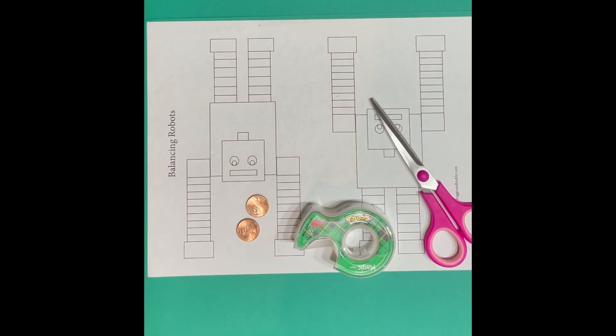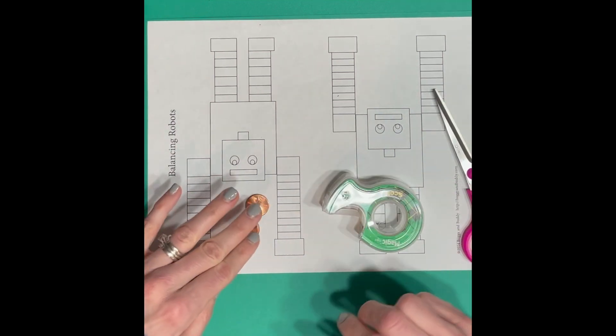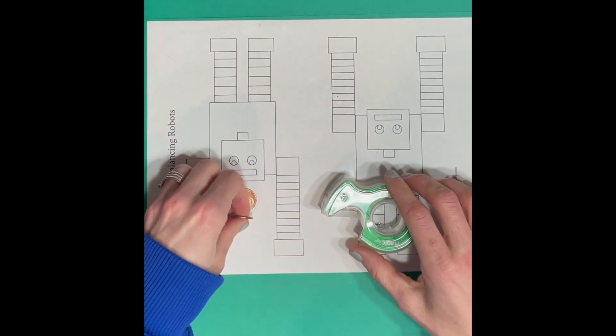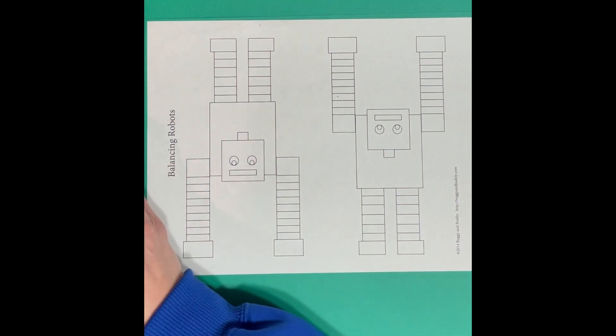The materials you're going to need are your robot template, some tape, two pennies, some scissors, and if you would like to color in your robot, colored pencils or markers or crayons, whatever you might have.